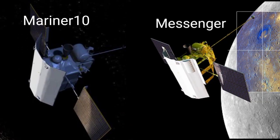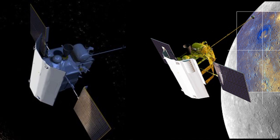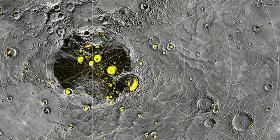Mercury has been visited by two spacecraft, Mariner 10 and Messenger. Mercury's surface has ice on it.